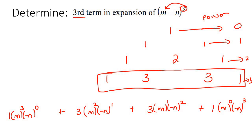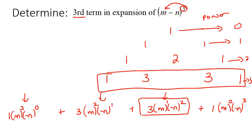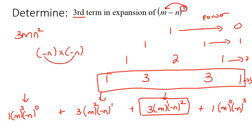Now they want to know what is the third term. So term 1, term 2, term 3 — that's this one. We need to neaten that up, so that's going to be 3m, and then negative n to the power of 2 is going to be a positive n squared. Why positive? Well, if you have negative n multiplied with another negative n, the two negatives make a positive. So this is the answer — and that's what we're going to be doing in this lesson: just finding a specific term.